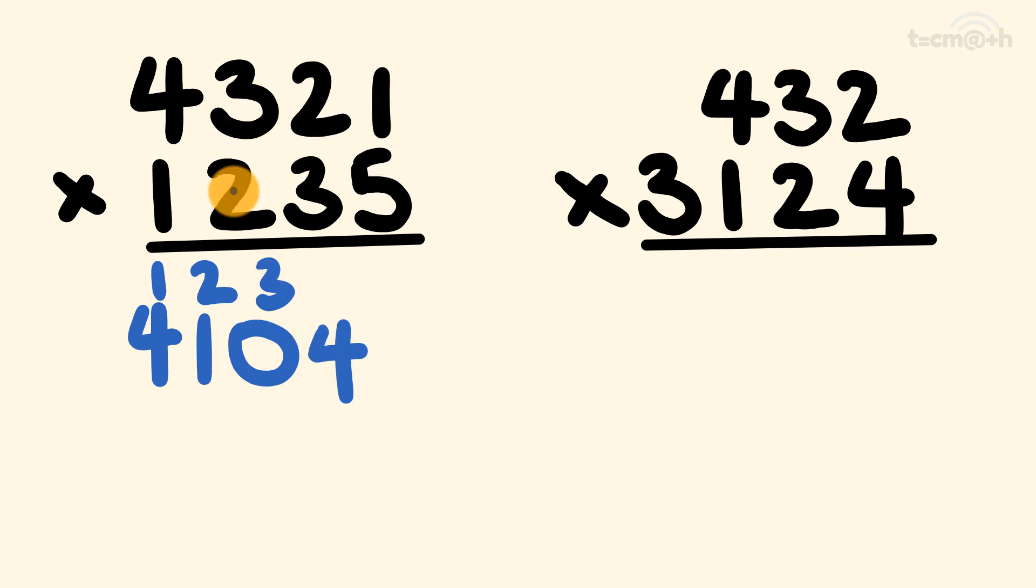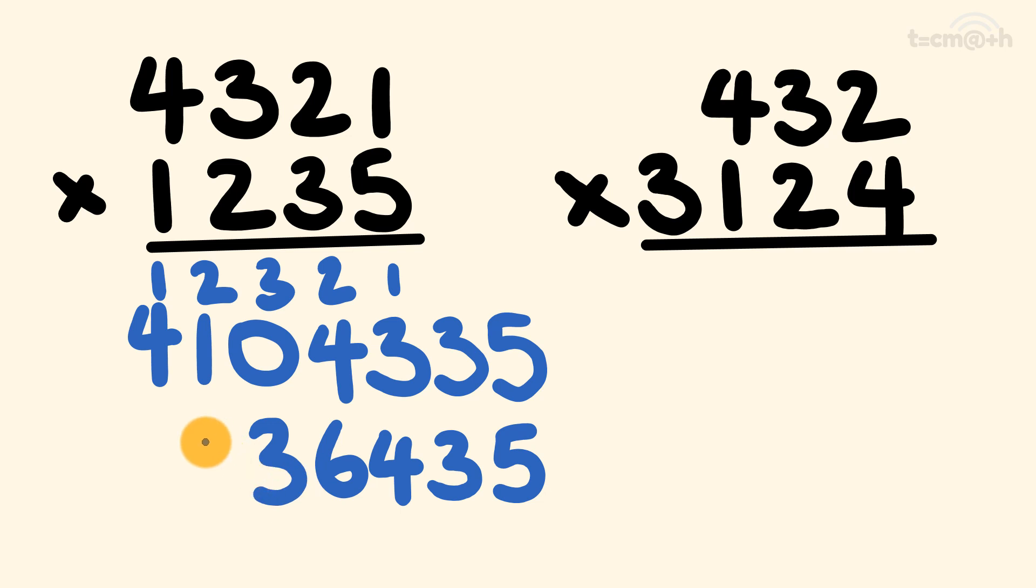Now we have 3 times 5, and 1 times 2, and 2 times 3. So 15, 17, we have 23. Now we have 2 times 5, and 1 times 3. So 10 plus 3 is 13. And then finally, we have 1 times 5, which is 5. So let's go through and put our final answer here. We have a 5, we have a 3, we have a 4, we have a 6, we have a 3, we have a 3, and we have a 5. So we have our answer, 5,336,435.